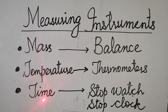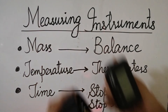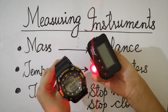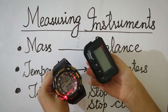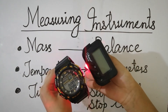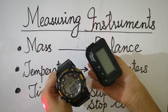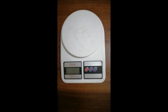Here is another type of thermometer used in the science lab for different experimental purposes. Time can be measured by a stopwatch and stop clock — here you can see the stop clock and stopwatch.